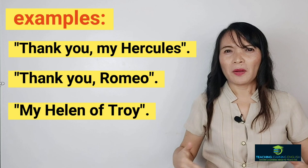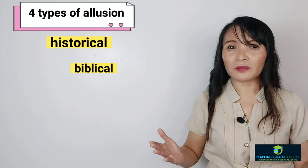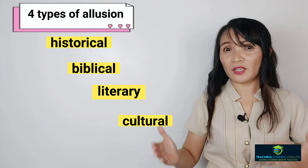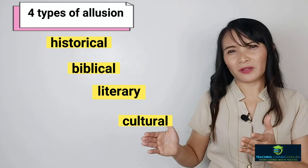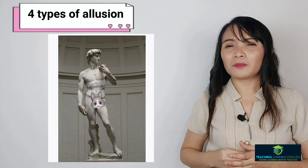You may say, 'My greatest Waterloo is when I failed the exam.' There are four types of allusion: historical, biblical, literary, and cultural. When you want to allude to stories or characters from history, such as Waterloo — Napoleon Bonaparte was defeated in Waterloo — that's historical. 'You are my Romeo' — that's literary. Michelangelo's well-known statue of David depicts the biblical hero King David. These are all examples of allusion.